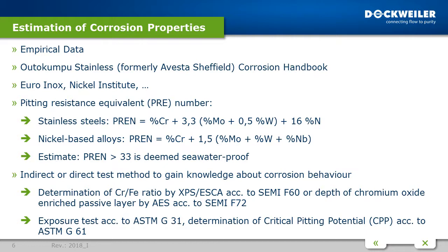Keep in mind that PRE expressions are based on accelerated laboratory tests performed on perfectly heat-treated base material, with no cold working, no welds, or any other manufacturing effects. In reality there is always a weld seam or grinding at the end, and these manufacturing steps decrease your numbers. This is very important to remember.